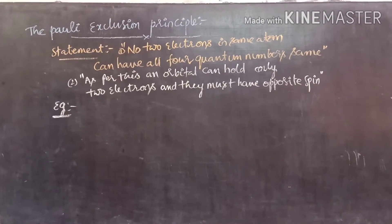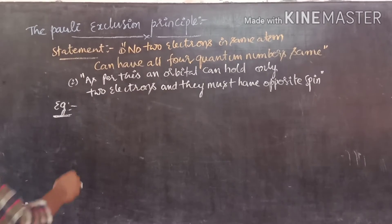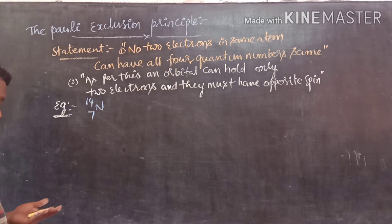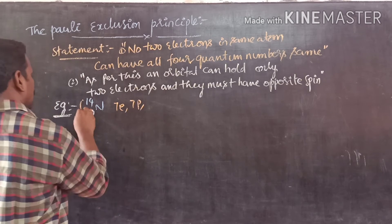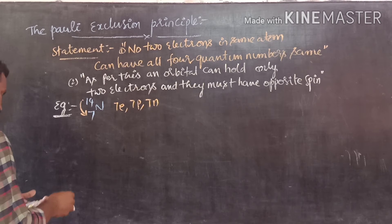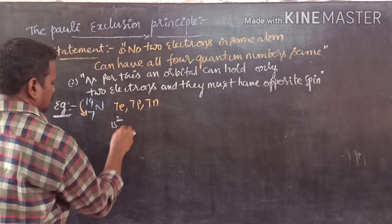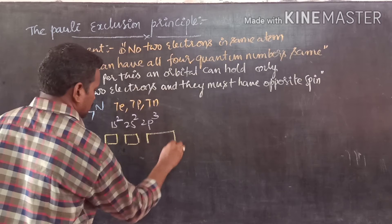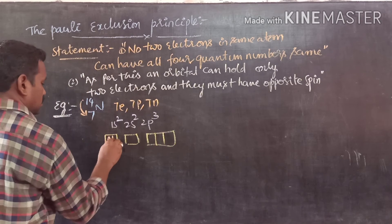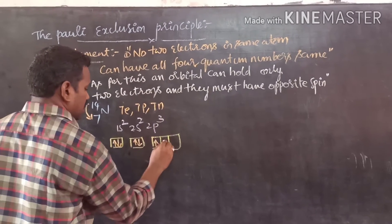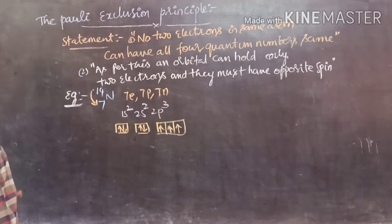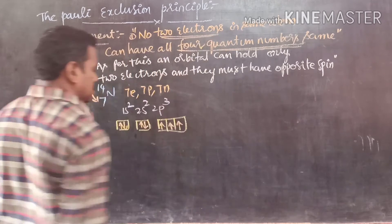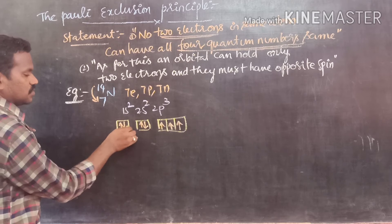Let us discuss Pauli's exclusion principle with examples, then come to the statement. For nitrogen (atomic number 7, mass number 14), with 7 electrons, 7 protons, and 7 neutrons, the electronic configuration is 1s², 2s², 2p³. In the block representation, I am going to write the quantum numbers for the 2 electrons of 1s.